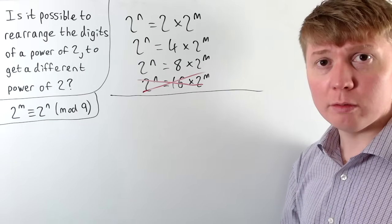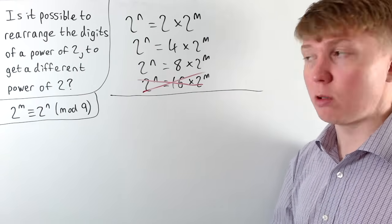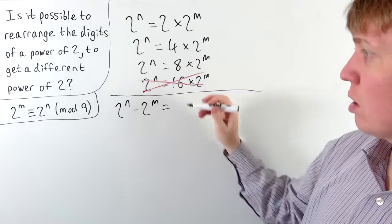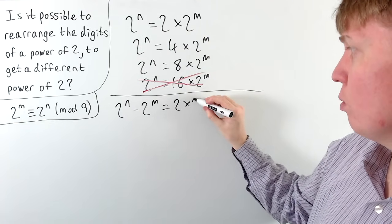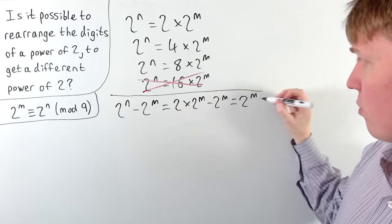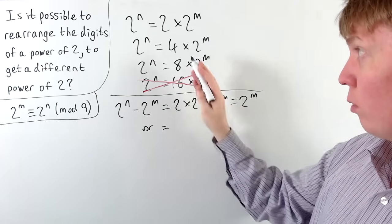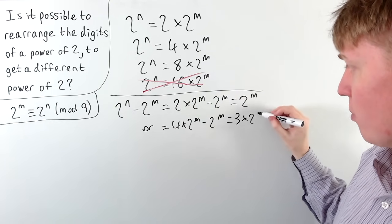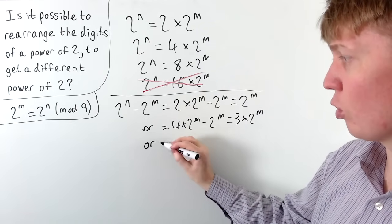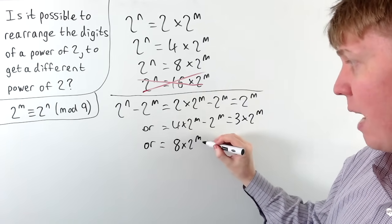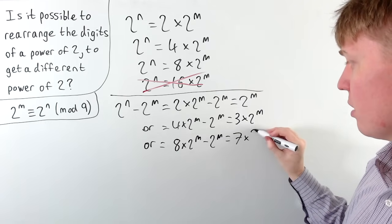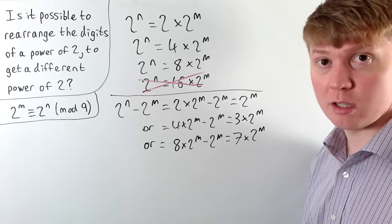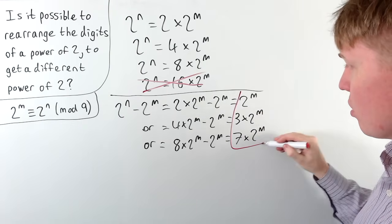This gives us a lot of information when we consider the difference 2^n − 2^m. There are three cases: if 2^n = 2·2^m, the difference is 2^m; if 2^n = 4·2^m, the difference is 3·2^m; and if 2^n = 8·2^m, the difference is 7·2^m. So the only three possibilities for the difference between the two powers of 2 are 2^m, 3·2^m, and 7·2^m.